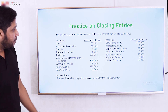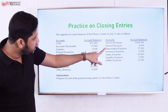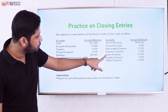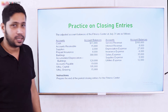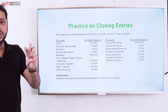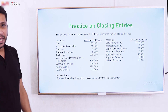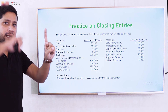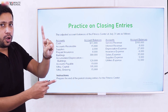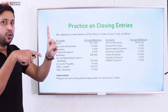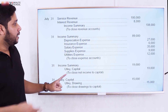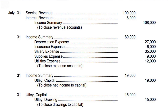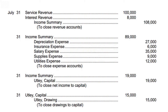For the expense items, the example includes depreciation, insurance, salaries, and utilities. These expense accounts are credited to close them, and income summary is debited for the total expense amount, bringing all expense accounts to zero.